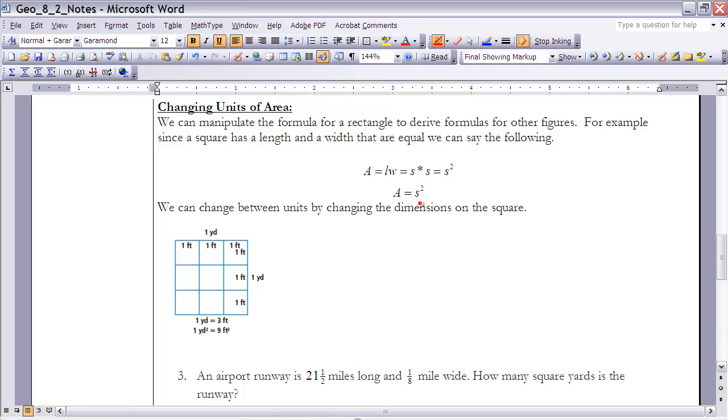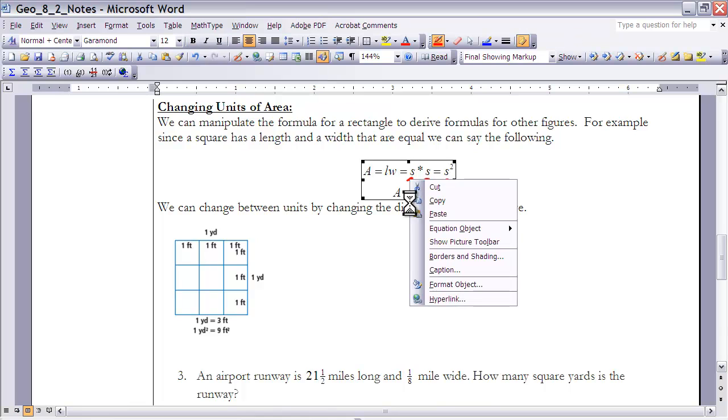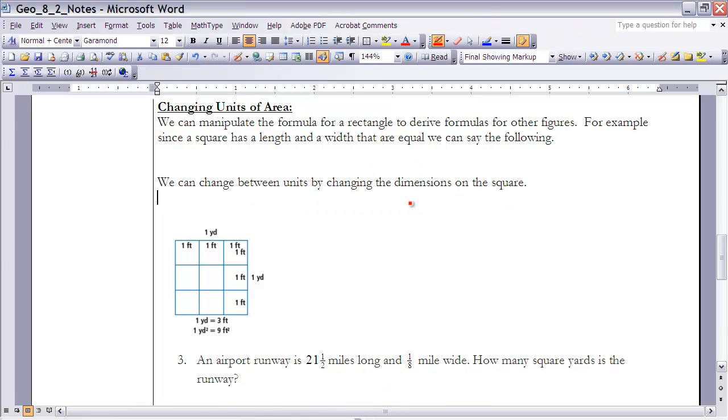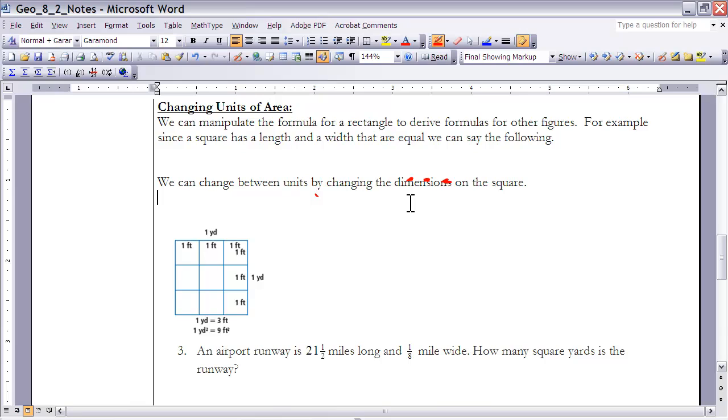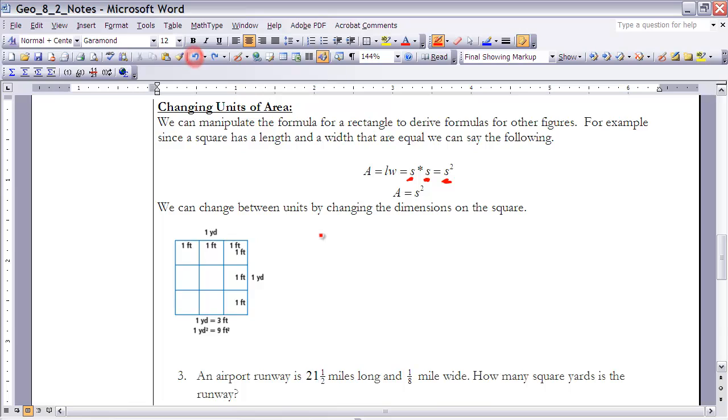So if the length of one side is s, then the other side is also s, therefore the area is s squared. So a formula for finding the area of a square is just s squared. That's why we have this formula for a square: A equals s squared.